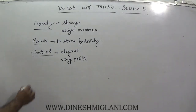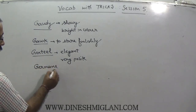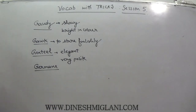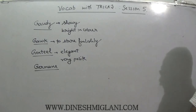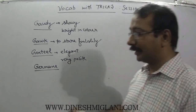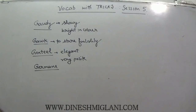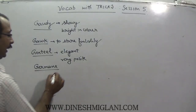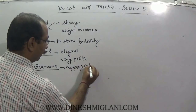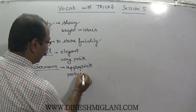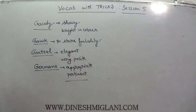Next one is germane. The word matches with Germany, and Germany is a very good country for goods manufacturing — Germany's goods are very perfect and appropriate. So germane means something that is appropriate, or upyukta. You may also call it as pertinent. Appropriate and pertinent — that is the meaning of germane.